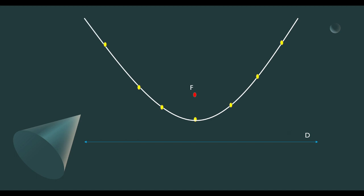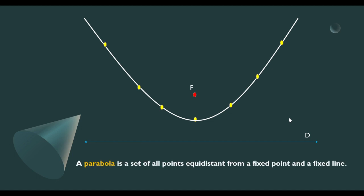A parabola is a collection of all points equidistant from a fixed point and a fixed line. This fixed point is called the focus, and this fixed line is called the directrix.